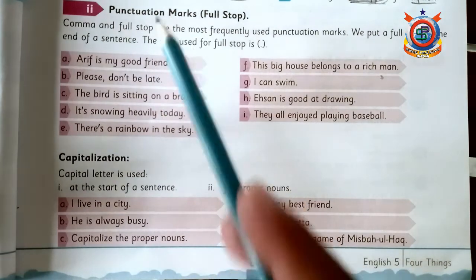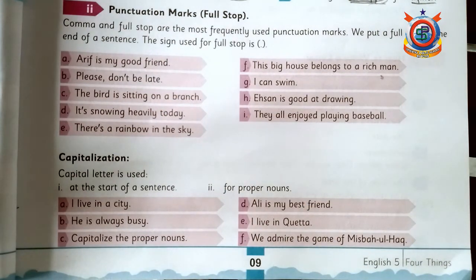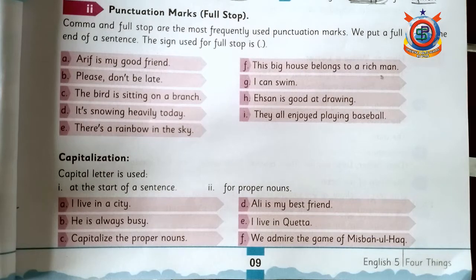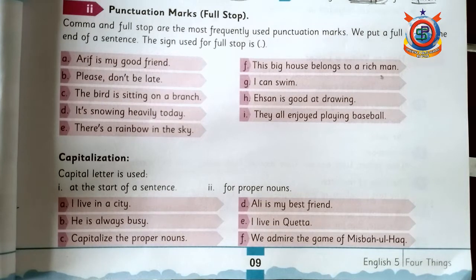Punctuation mark — such as full stop, comma, or question mark — is used in writing to separate sentences and their elements, and to clarify meanings.